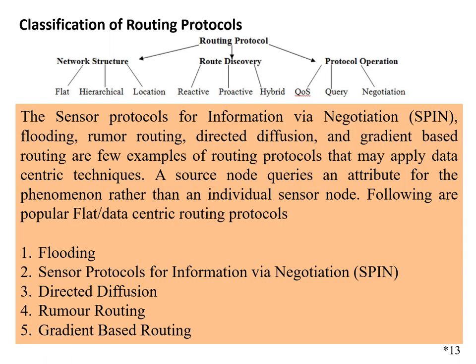We have already gone through the slides covering: sensor protocols for information via negotiation (SPIN), flooding, rumor routing, directed diffusion, and gradient-based routing. These are all examples of routing protocols that apply data-centric techniques. In these protocols, a source node queries based on the phenomena rather than individual sensor nodes. The following are popular flat routing protocols: flooding, SPIN, directed diffusion, and gradient-based routing.